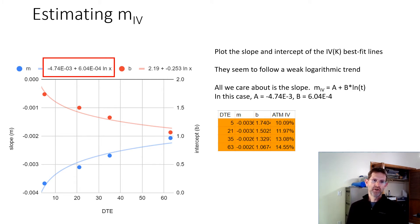A equals -4.74 times 10 to the -3, whereas B equals 6.04 times 10 to the -4. But that changes every day.